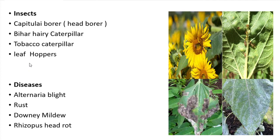The important diseases of sunflower are Alternaria blight, rust, downy mildew, Rhizopus head rot, and powdery mildew. In Rhizopus head rot, the head region attached to the stem of the sunflower gets rotted, the entire head rots and falls down.